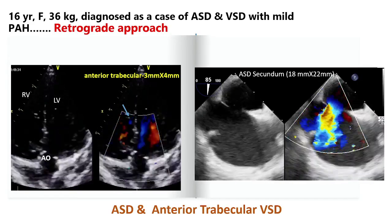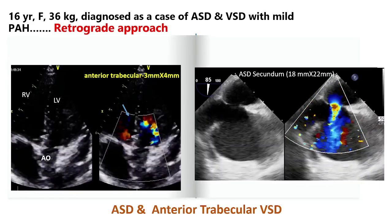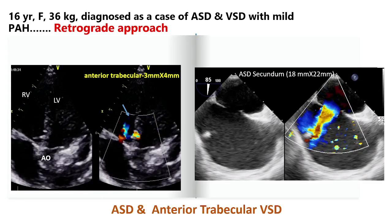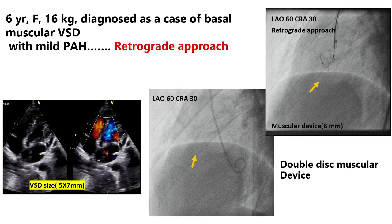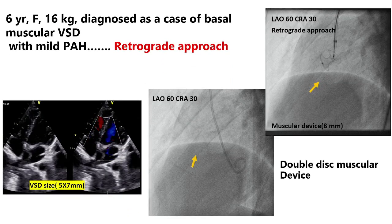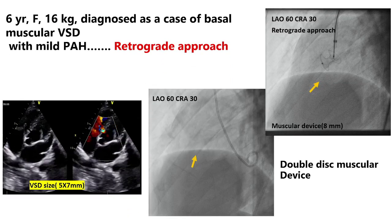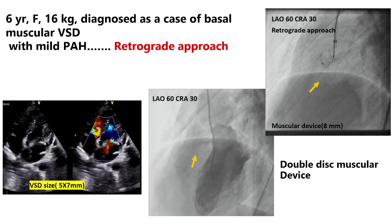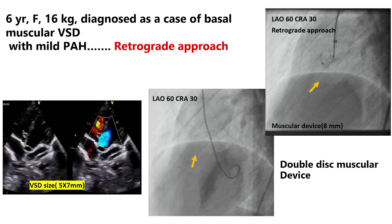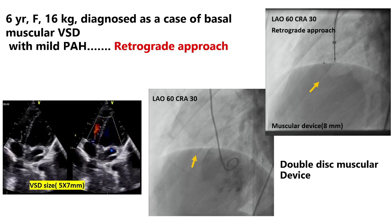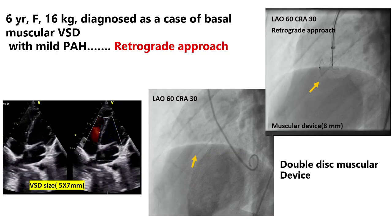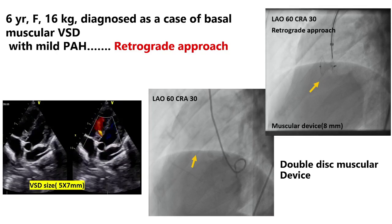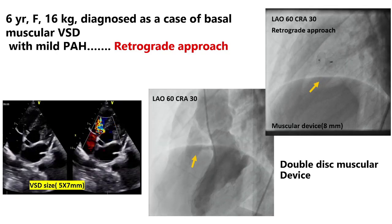We close by retrograde approach in patients who have both ASD and VSD, crossing the VSD and deploying both the ASD and VSD devices. When the VSD size is less than 6 mm, we use ADO2; when more than 6 mm, we take a muscular device — double disc or ADO1. In this case, we used the retrograde approach with a muscular device, size 8.